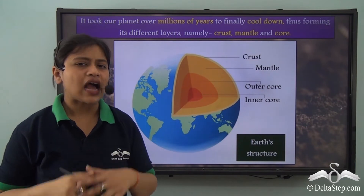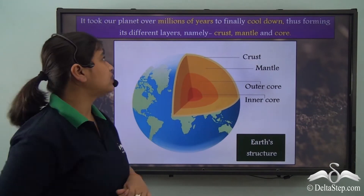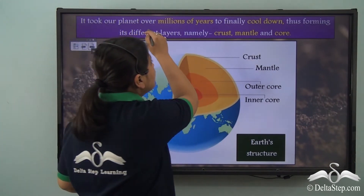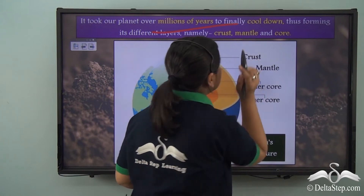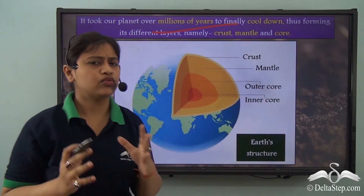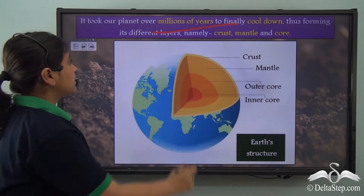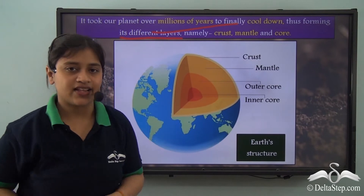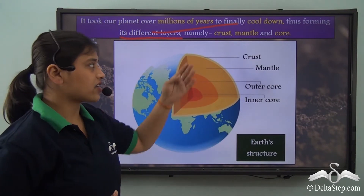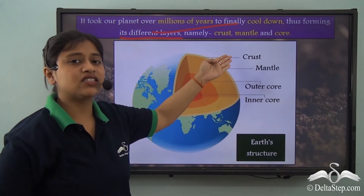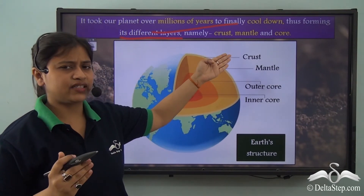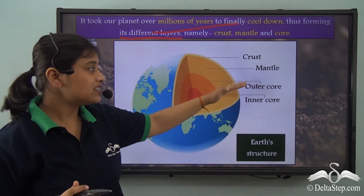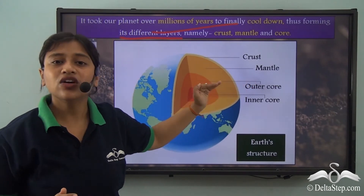Therefore, we now know that it took our planet over millions of years to finally cool down, thus forming the earth's different layers — namely the crust, that is the topmost layer, followed by the mantle, and lastly the core.